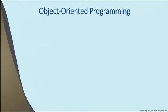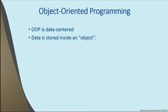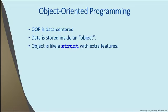Object-oriented programming, unlike procedural programming, is centered on data as opposed to functions. In the object-oriented world, data are stored inside something called an object. In everyday speech, the word object can refer to almost anything from an apple to a zebra, but object-oriented programming gives the word object a very special meaning. That meaning will not be completely clear until you've seen some examples, but one thing that will help you get started is to think of an object as a struct with some extra features.